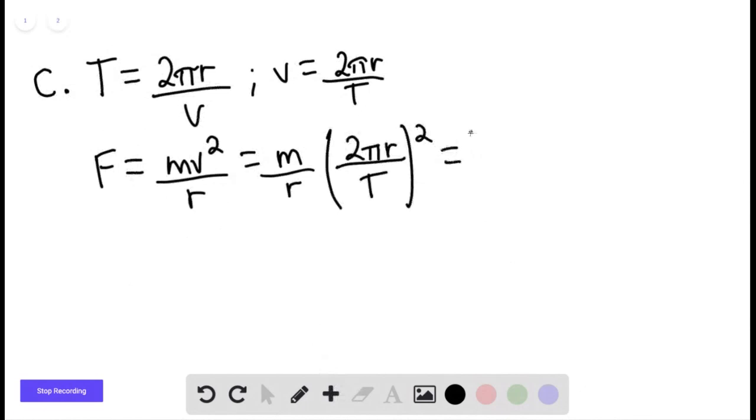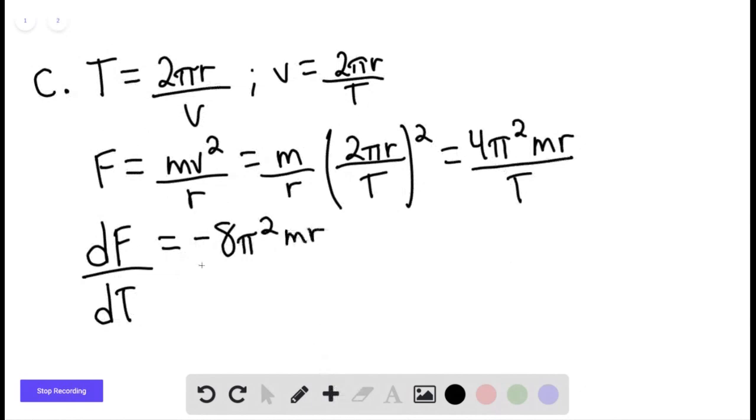This would simply be equal to 4pi squared mr divided by t squared. And then we're going to solve for the change in the force with respect to t, the period. So this would be equal to negative 8pi squared m r over t cubed.